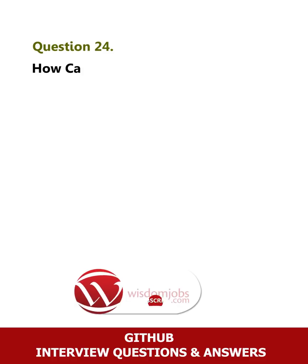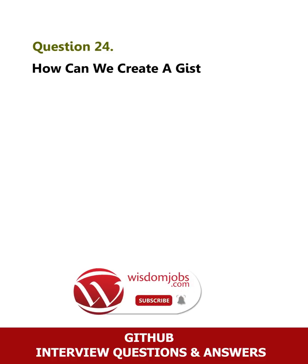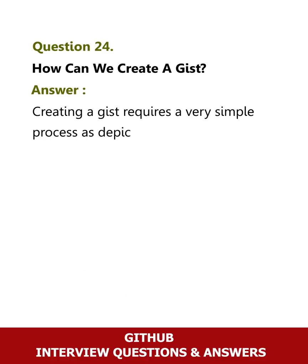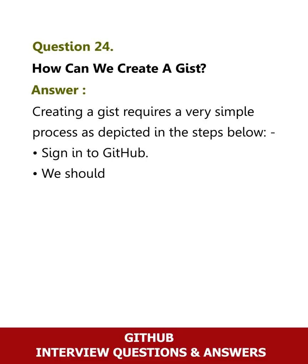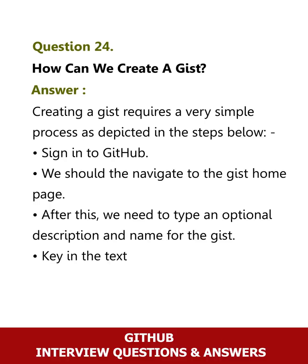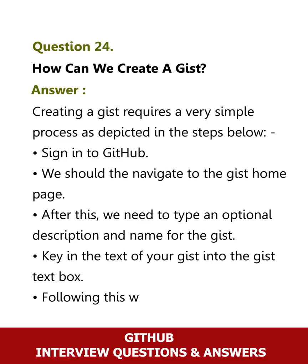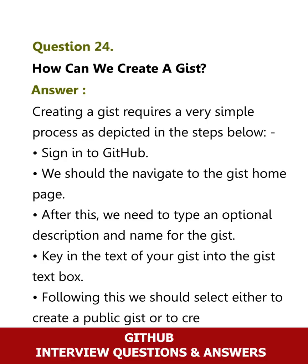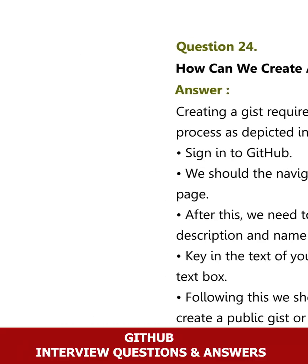Question 24: How can we create a gist? Answer: Creating a gist requires a very simple process. Sign in to GitHub, then navigate to the gist home page. Type an optional description and name for the gist. Key in the text of your gist into the gist text box. Following this, select either to create a public gist or to create a secret gist.